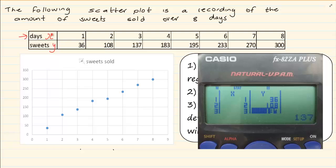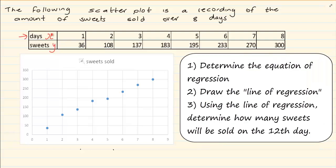So now we are under the y column. Under the y column we are going to press 36 equals, 108 equals, 137 equals, 183 equals, 195 equals, 233 equals, 270 equals, 300 equal. Then you are going to press your AC.